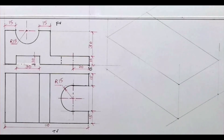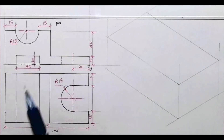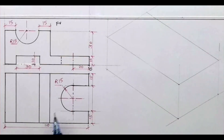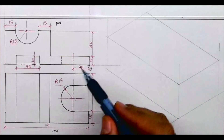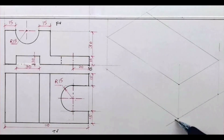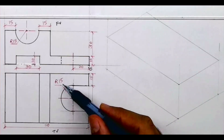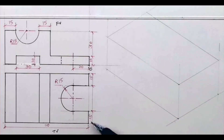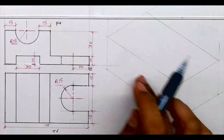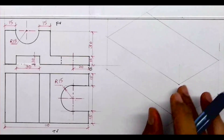Welcome to technical drawing. Today we'll see this object in isometric view, front view, and top view. The length is 110, height is 40, and width is 60. Now if you see in front view, there is only one part — this entire part is one unit.